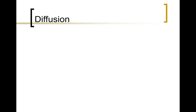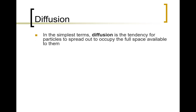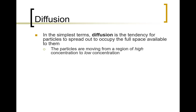We begin this discussion with the topic of diffusion. Perhaps the simplest way to describe diffusion is as the process which occurs when a substance spreads out from a region where it's concentrated into a larger region. A more technical description is that the solute is moving down a concentration gradient.